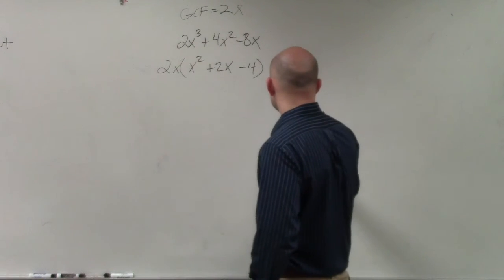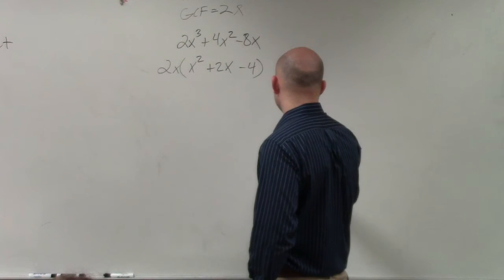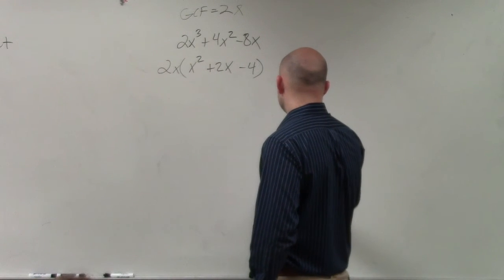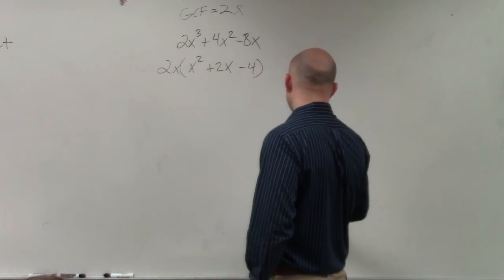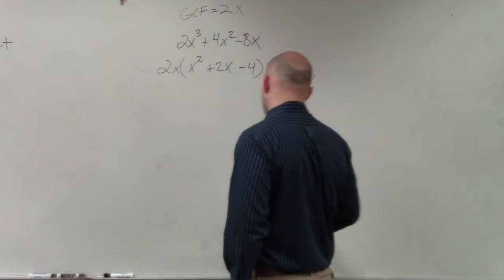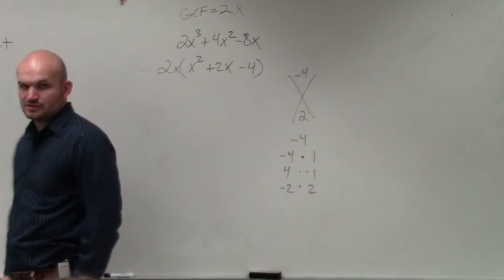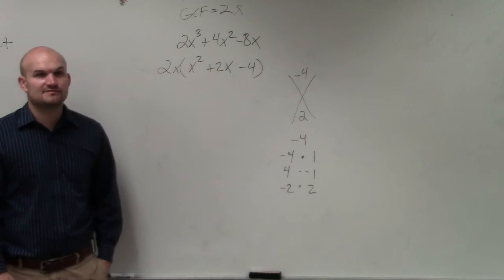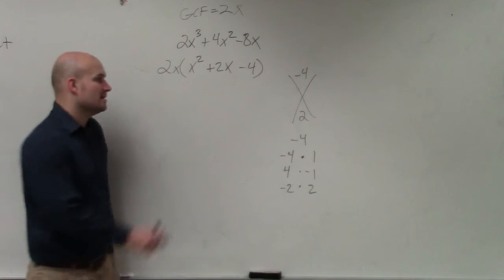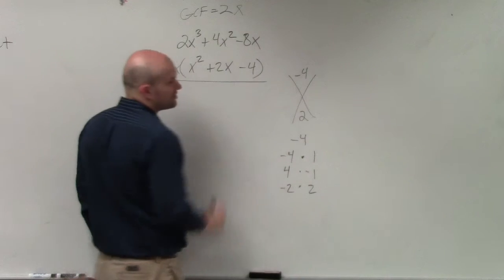So we look at our numbers for 4. To multiply to give us negative 4, it could be negative 4 and 1, positive 4 and negative 1, and negative 2 and positive 2. Do any of those factors add up to give you positive 2? No. So guess what? That is your factored form.